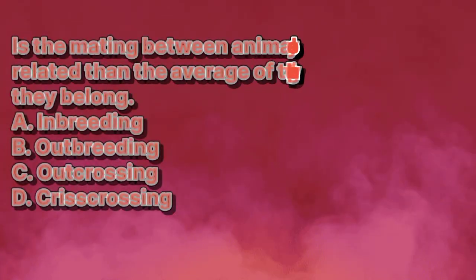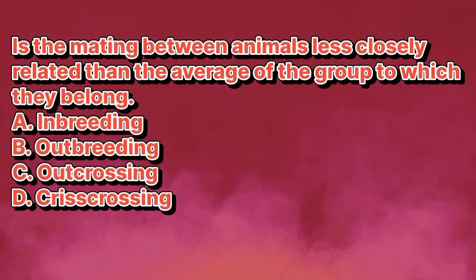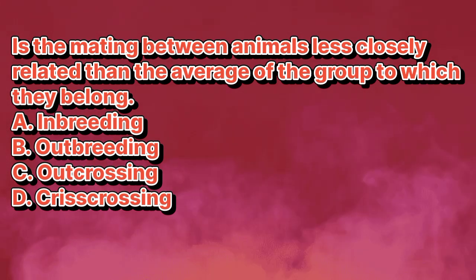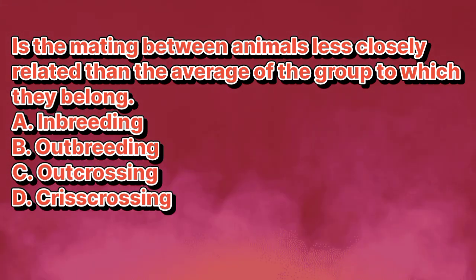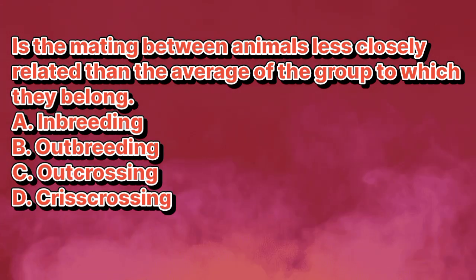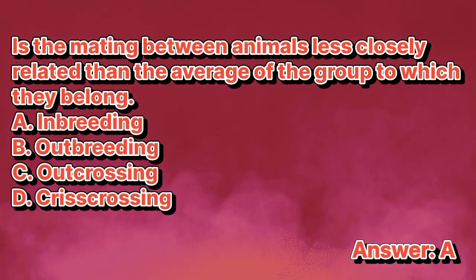B. What is the mating between animals less closely related than the average of the group to which they belong? A. Inbreeding. B. Outbreeding. C. Outcrossing. D. Crisscrossing. The answer is letter A.